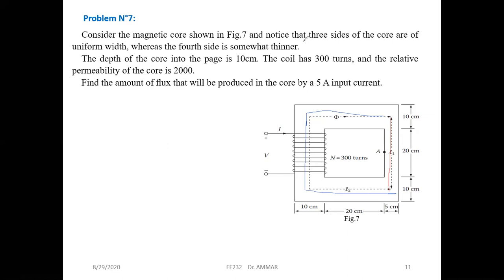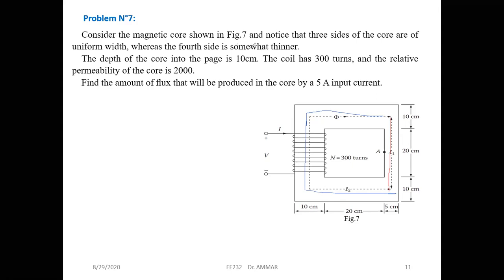The three sides of uniform width are 10 centimeters wide, as shown. The fourth side is somewhat thinner — its width here is half, so 5 centimeters. The depth of the core into the page, which is the thickness you cannot see, is also given.